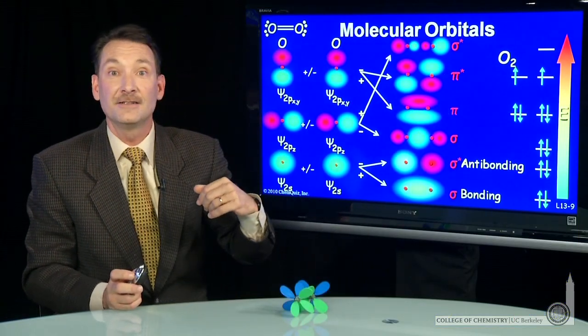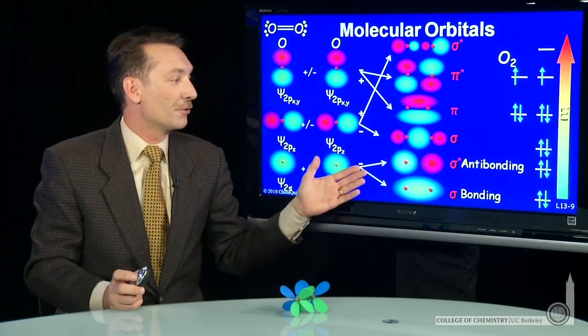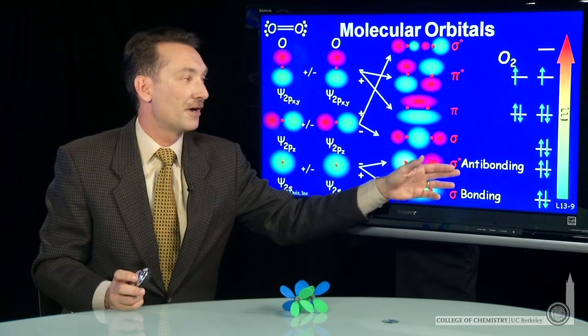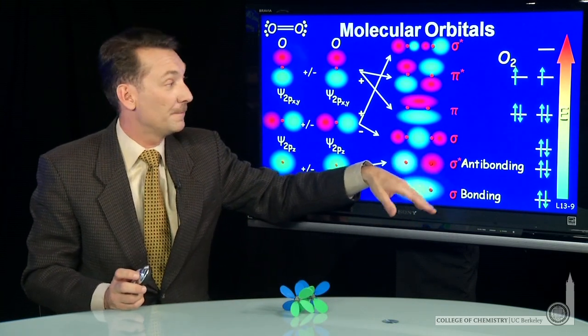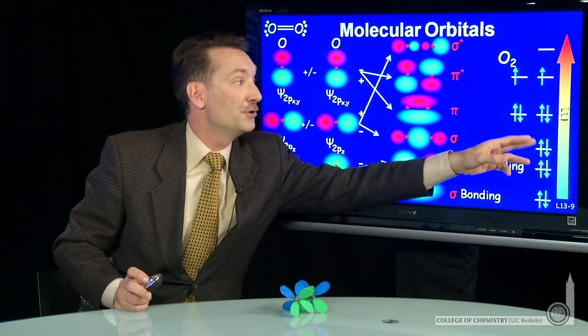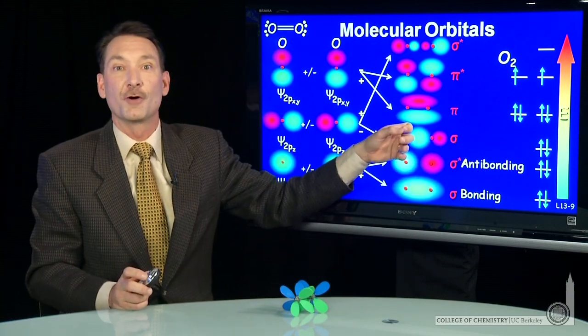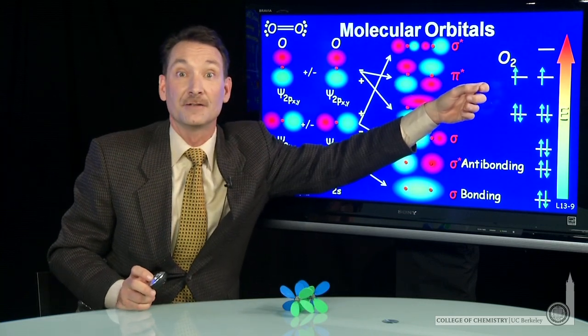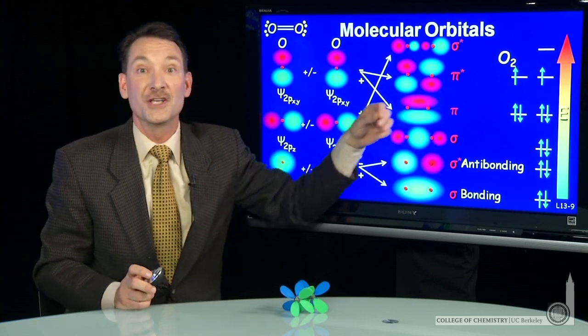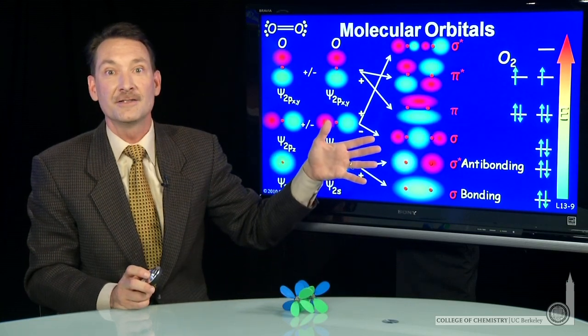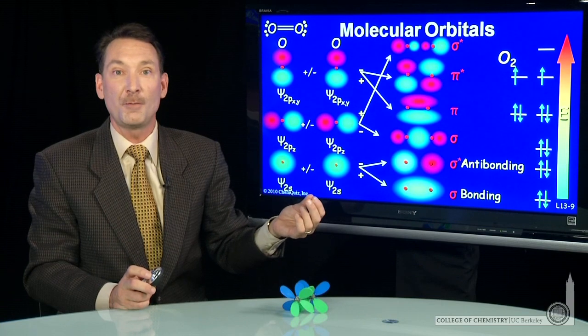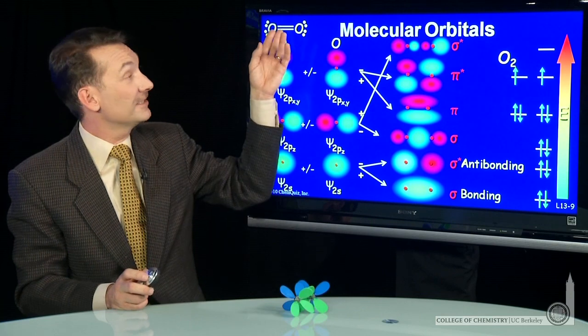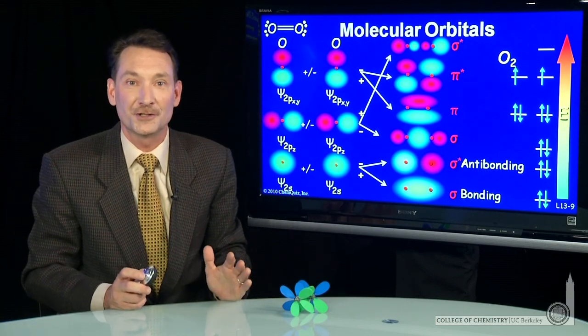And let's calculate the bond order. So the bond order, I have a sigma bonding and antibonding orbital to start, two electrons in each. Those cancel each other out. Zero bond order from that. Now I have 1, 2, 3, 4, 5, 6 electrons in bonding orbitals here, and two electrons in antibonding orbitals here. So 6 minus 2 is 4 bonding electrons divided by 2, two formal bonds. So I have a formal bond order of 2 in oxygen. And that is consistent with the double bond that my Lewis dot structure predicted.